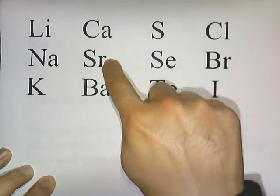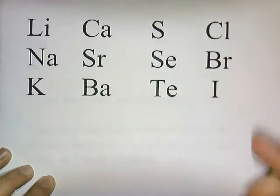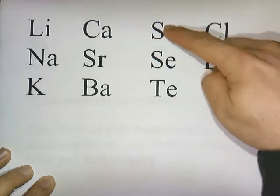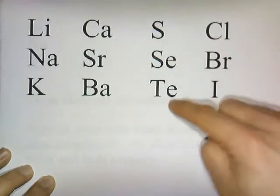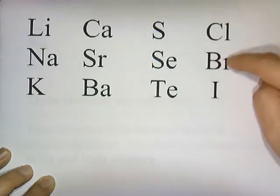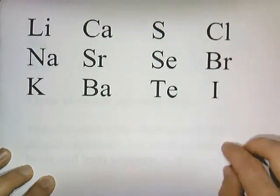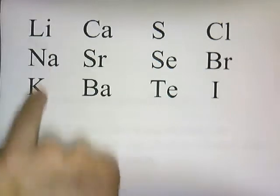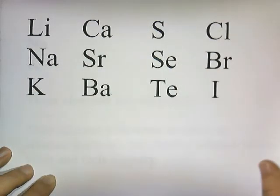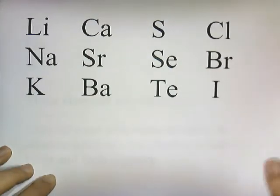Calcium, strontium, and barium form another triad. Sulfur, selenium, and tellurium form another triad. And chlorine, bromine, and iodine form another triad. So if elements fall in the same vertical column, they share similar chemical properties.